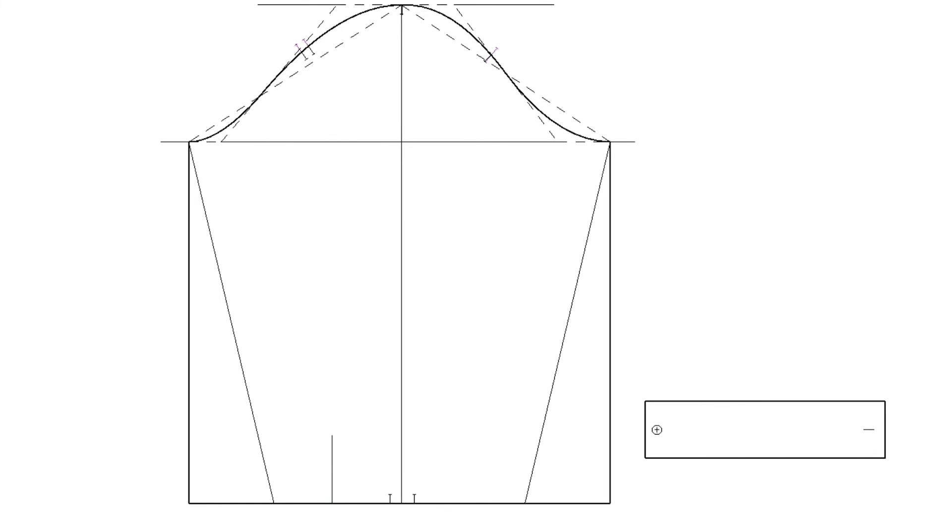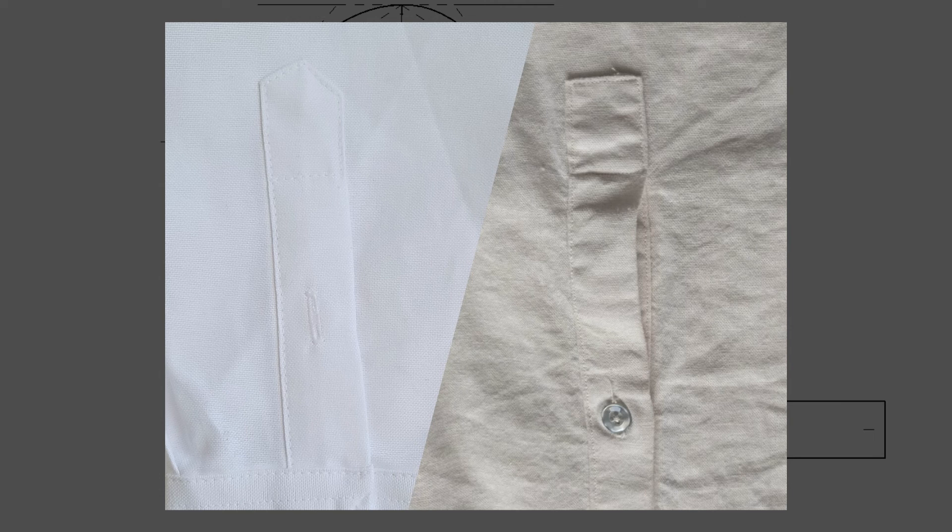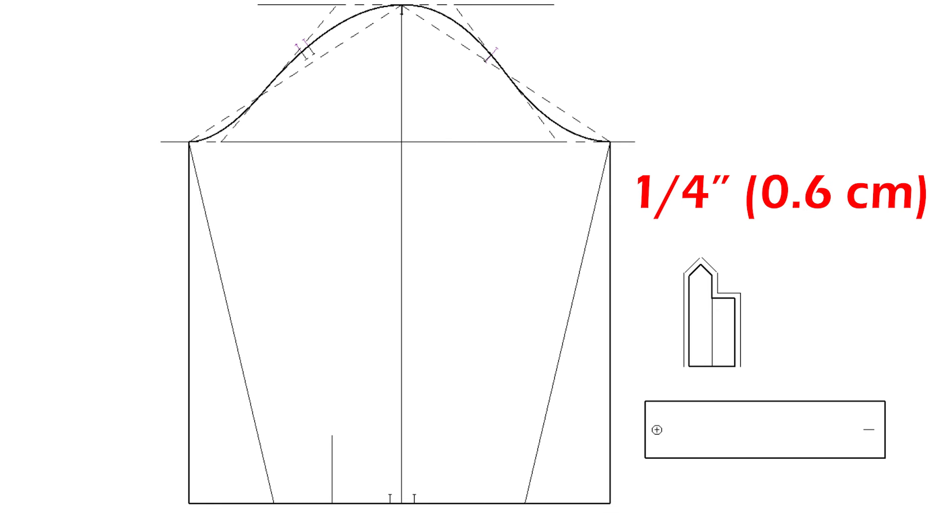Let's draw the top placket. Draw a rectangle three inches height because this length is three inches, and one inch width. Make this double because we need the underside. Then, lengthen only the top side. That's your design so you can make it a rectangle or triangle shape. You will have a quarter of an inch seam allowance all the way around except the bottom. The bottom will have the same amount of seam allowance as the sleeve.